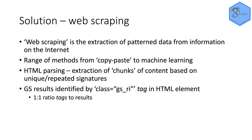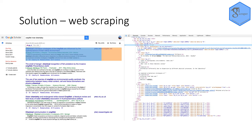Within Google Scholar you can identify each result in a page of results by the tag class equals GSRI within the HTML code, and for every one set of search results there is one tag, which makes it quite easy. On the left you can see the search results in Google Scholar and on the right you can see the HTML — there's an entire div with the class GSRI — and we can then extract each of the pieces of information within that search result using this code.